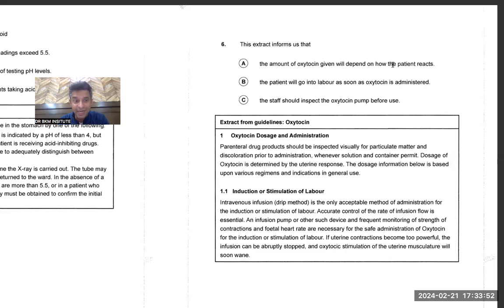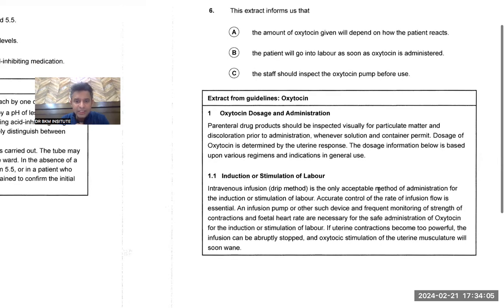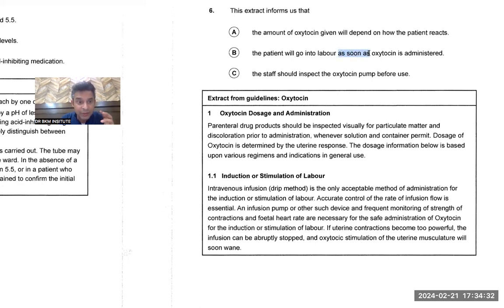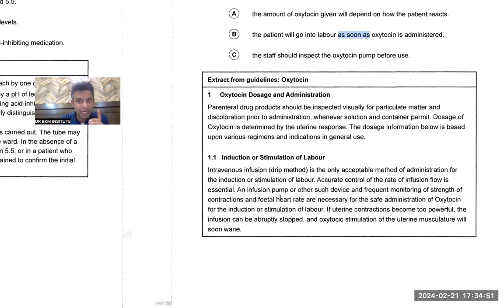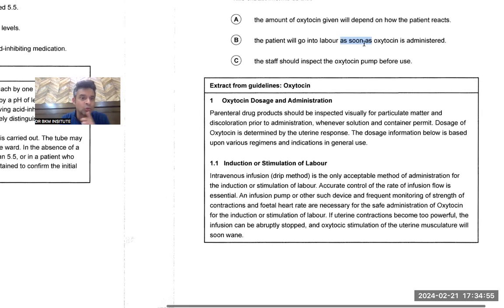In the exam you will not be able to relate it that easily. Option: 'The patient will go into labor as soon as oxytocin is administered.' The key word here is 'as soon as' — this is an adverb that changes the intensity of the sentence. There is no line in the extract that says the patient will go into labor as soon as you administer oxytocin. So 'as soon as' is the main word to eliminate this option.